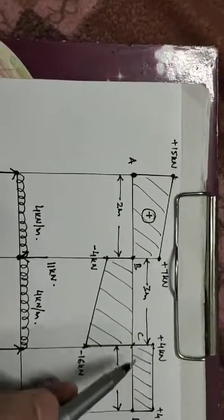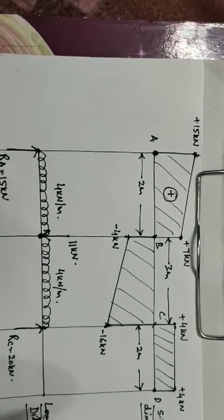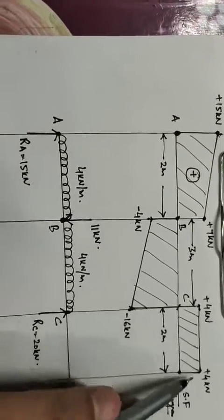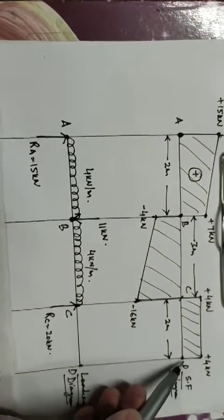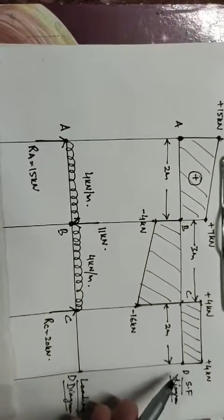From point C to D the shear force line is horizontal, which means there is no load from C to D. At point D the shear force changes from 4 to 0, a difference of 4, so there is a vertical load of 4 kilo Newton at point D — positive means downward.